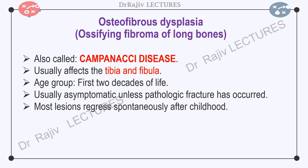Osteofibrous dysplasia, or ossifying fibroma of long bones, also known as Campanacci disease, is a rare lesion that usually affects the tibia and fibula in the first two decades of life. The condition is usually asymptomatic unless a pathologic fracture has occurred. Most lesions regress spontaneously after childhood.